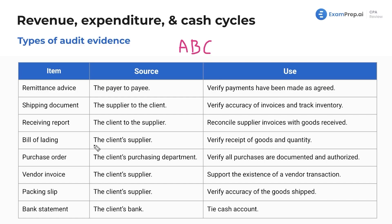The bill of lading comes from the client's supplier — notice multiple documents can be involved in a single transaction. It is used to verify the receipt of goods and the quantity. Definitely memorize the uses of all of these, because in SIMs and multiple choice questions you'll need to know which documentation to use in order to perform a proper, accurate test.